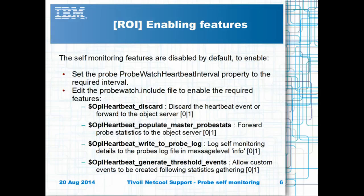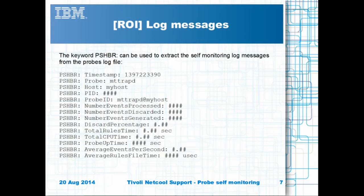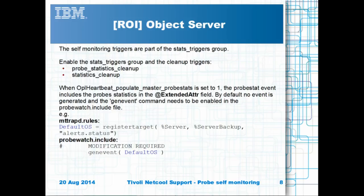Because the settings are configured in the rules file, they can be altered using a kill-hup to the probe, which makes them easy to enable and disable. You can grab the probe logging messages from the probe's log file using the log messages prefix string PSHBR. The same details are sent to the object server for statistics analysis and custom automated triggering. To collect the statistics, the stats_trigger group needs to be enabled, as do the individual probe stats triggers.